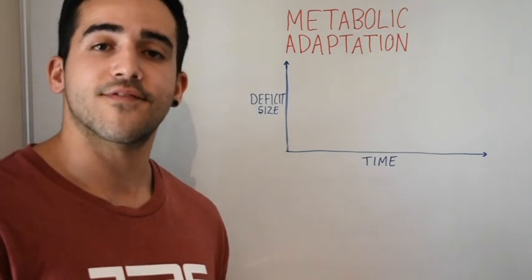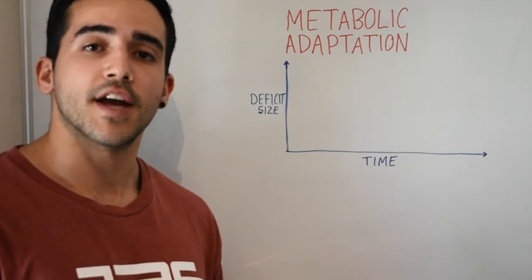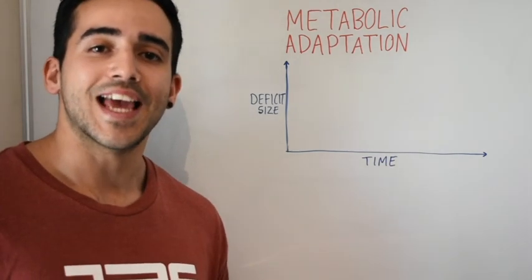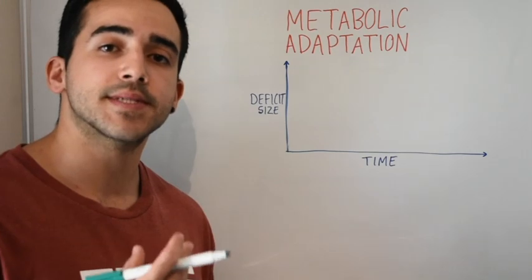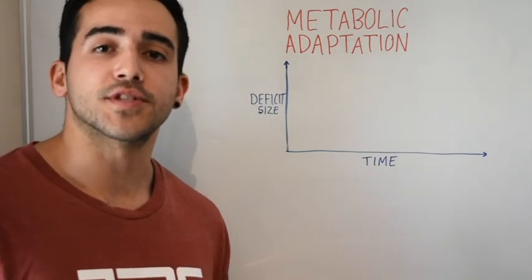Now if we fast forward thousands of years, the same concept still applies. Dieting and calorie restriction is essentially sending those same starvation signals to the nervous system and to the brain, forcing it to adapt.